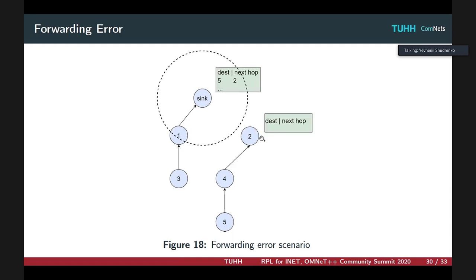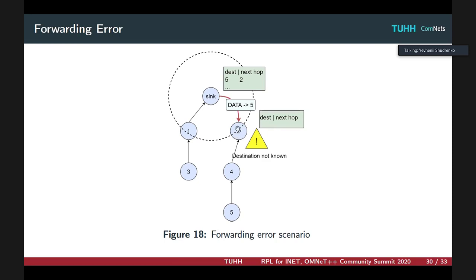Here you see that host 2 has cleared its routing table, but then it returns back into sink's vicinity. At some point, the sink may try to forward some data to host 5, but host 2 hasn't got that routing information anymore. So the forwarding error is reported back to the sink to clear this erroneous state.